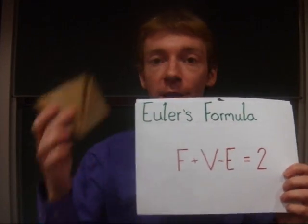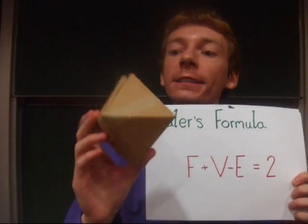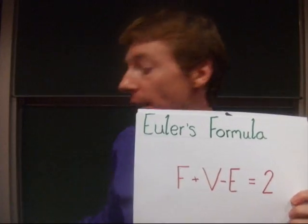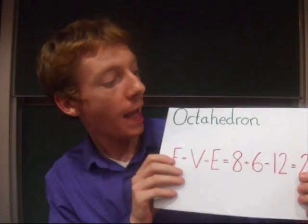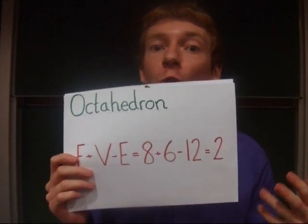So, for example, for this object here, it's called an octahedron. It has eight faces, it has six corners, and it has twelve edges. If I put that into Euler's formula, it looks like this. So it says 8 plus 6 minus 12 equals 2, which it should, and that's what I expect.